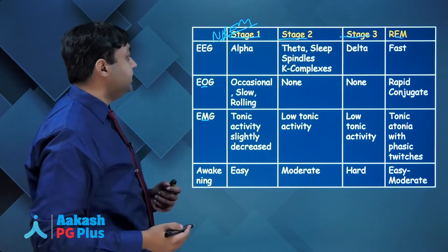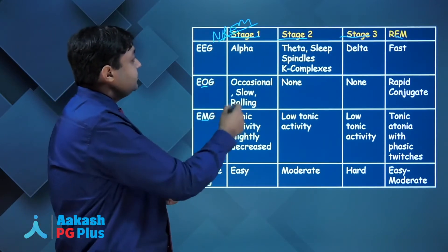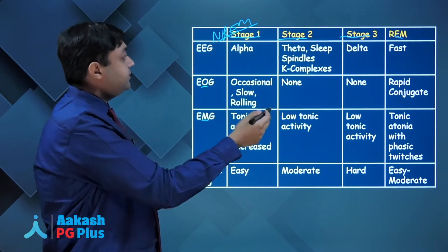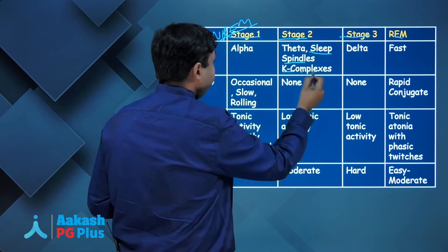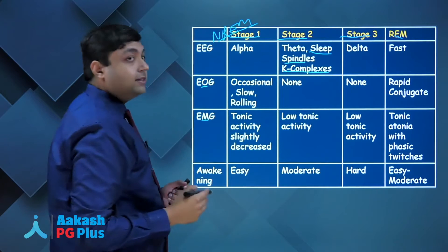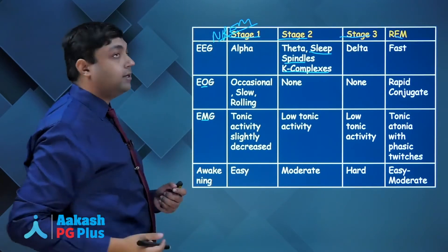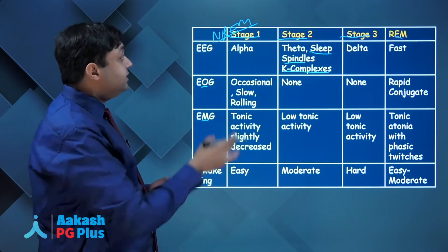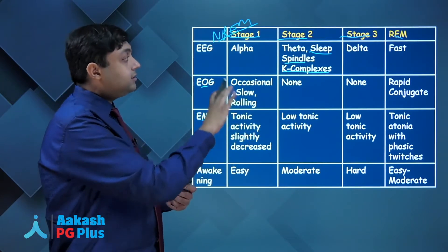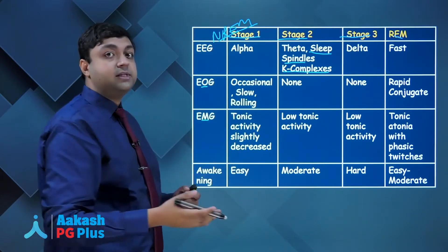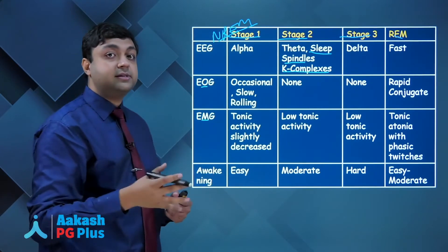If we talk about the EEG: stage 1 has alpha waves; stage 2 has theta waves, and sleep spindles and K complexes appear here — the appearance of sleep spindles and K complexes heralds the occurrence of stage 2. Stage 3 has further slowing and thus has delta waves. REM sleep has EEG activity similar to when a person is awake.